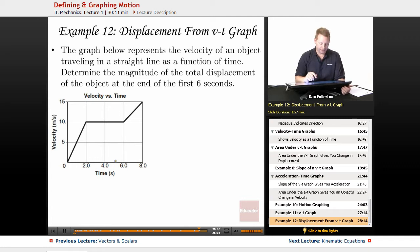Let's take a look at one last example. How can we get displacement from a velocity time graph? The graph below shows the velocity of an object traveling in a straight line as a function of time. Determine the magnitude of the total displacement of the object at the end of the first 6 seconds.